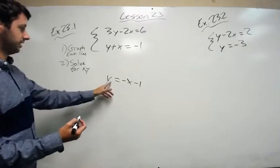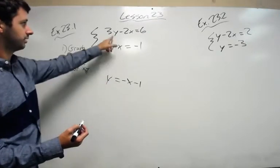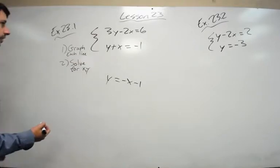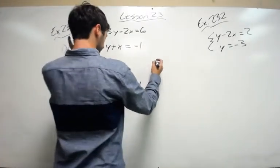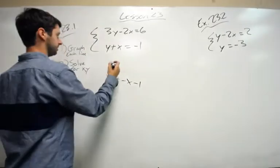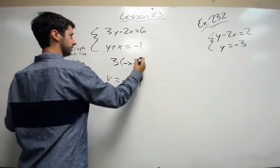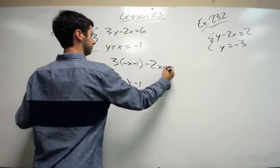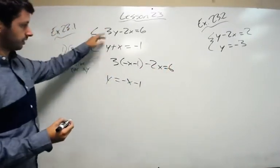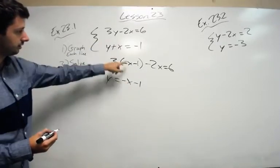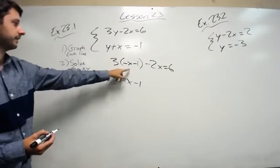And I can substitute this in for y up here. So I plug in 3 times negative x minus 1 minus 2x equals 6. Simply plugged in our value for y, like so. Distribute.